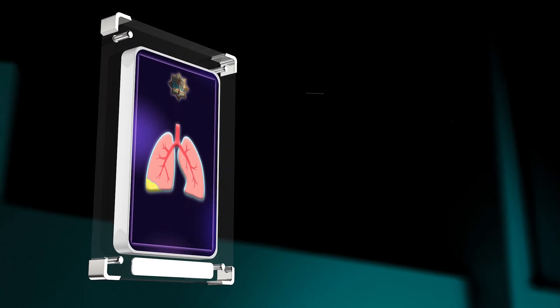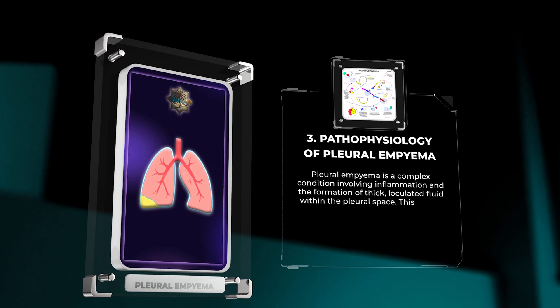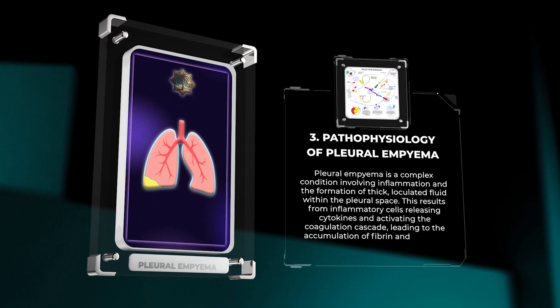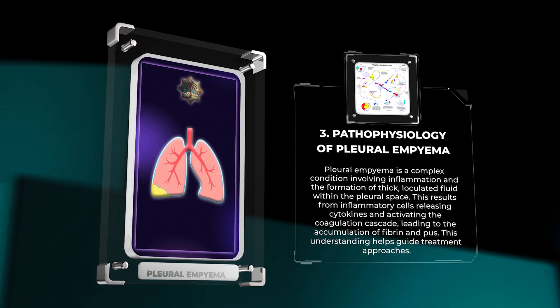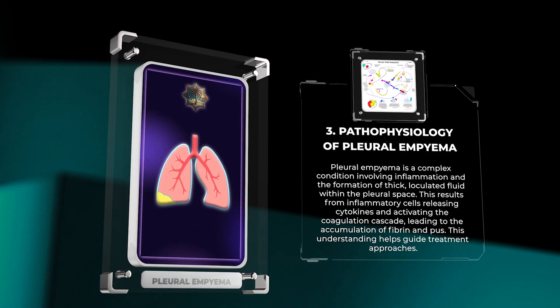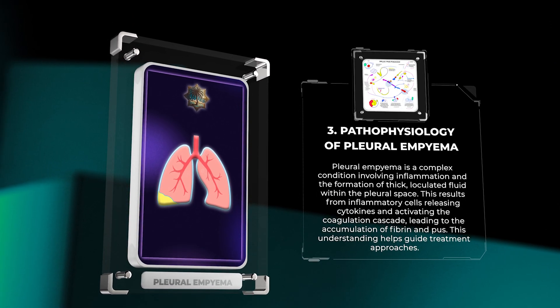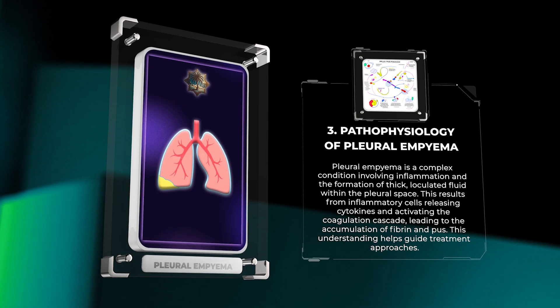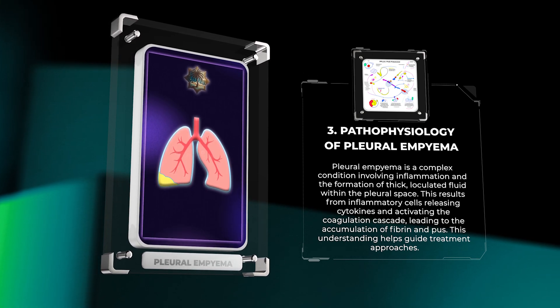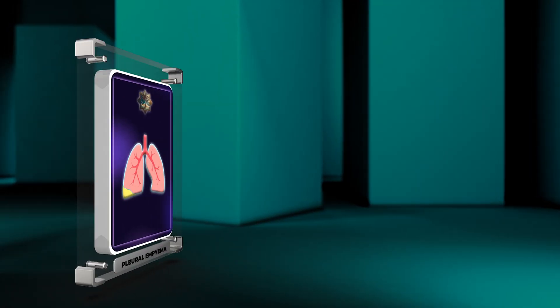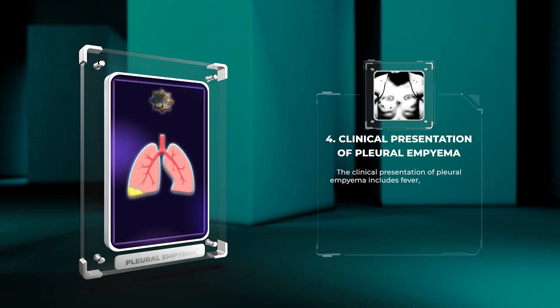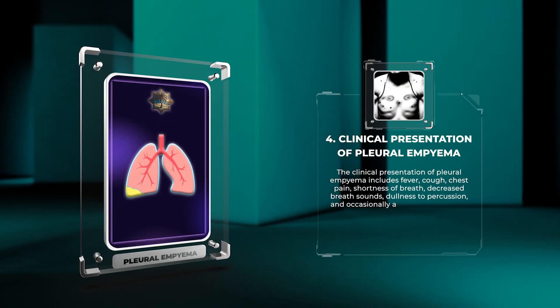Pleural empyema is a complex condition involving inflammation and the formation of thick loculated fluid within the pleural space. This results from inflammatory cells releasing cytokines and activating the coagulation cascade, leading to the accumulation of fibrin and pus. This understanding helps guide treatment approaches.